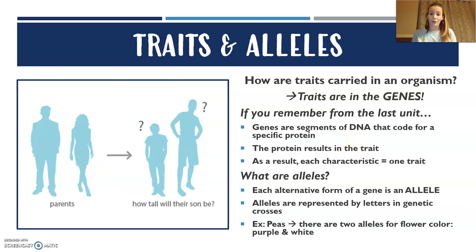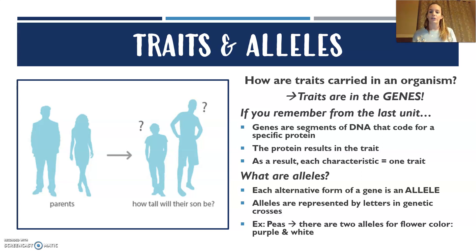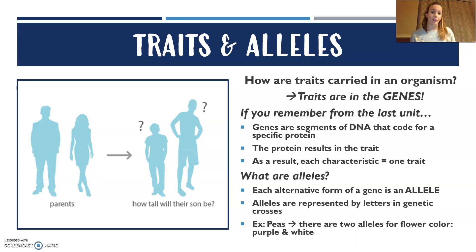So traits and alleles — we've already covered genes and DNA and how we get the traits that we have. Your genes have these traits, and they relate to the characteristics that you show. Your alleles are alternative forms of the gene, and these are represented by letters. If we bring back Punnett squares: big letters, little letters — like capital A, little a, crossed with little a, little a. Those alleles are what appear in the crosses.